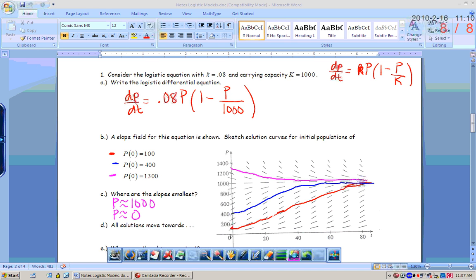At the very beginning, when p is close to zero, or like down here. Obviously, if p is zero, you're not going to get any population growth. But if p is very, very, very small, then at first the slopes are going to be really small and then get bigger and bigger and bigger.